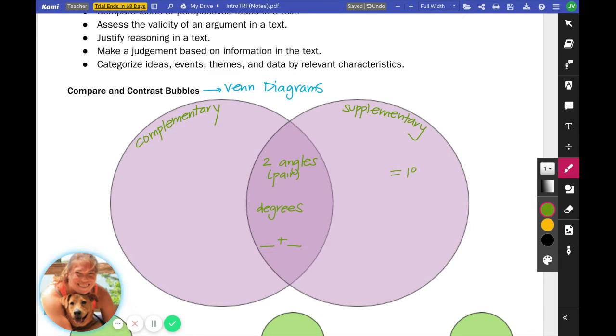Now supplementary, that's 180. Complementary is 90. 30 plus 60 equals 90. So 30 and 60 are complementary angles. 100 plus 80 equals 180. So they are supplementary angles. Because of that 180, we've got some connections to a linear pair.